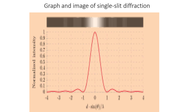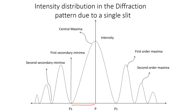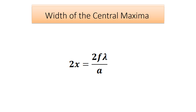We derive an expression for the width of the central maxima. If x is the distance of the first minima from P — the center of the screen — then the width of the central maxima will be 2x. We derive the width of the central maxima, 2x, as equal to 2fλ/a, where f is the focal length of lens L2, small a is the width of the slit, and λ is the wavelength of the light incident on the slit. Please remember this expression — it will be useful while doing the slit width experiment.